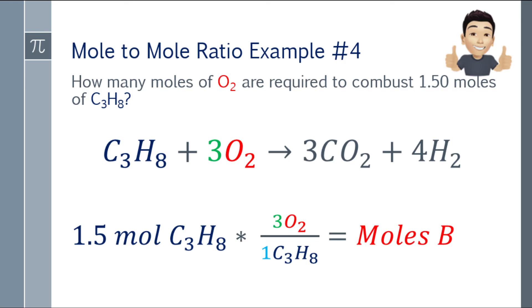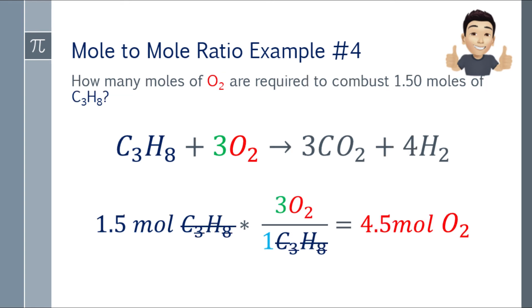Substituting the coefficient of O2, the propane units cancel out. 1.5 moles times 3 divided by 1 gives 4.5 moles of oxygen gas.